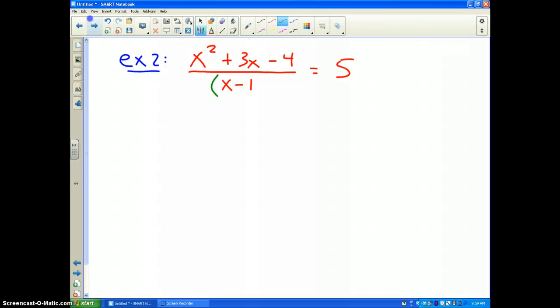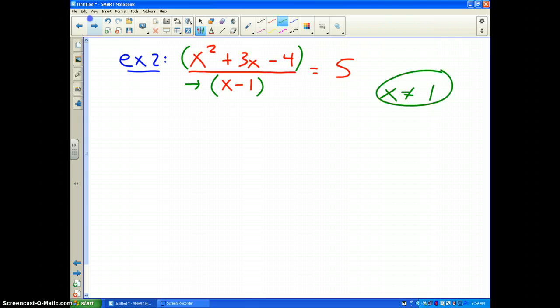All right, again, I put in parentheses. And I look at the denominator and I realize that x cannot be the number 1. x cannot be 1. Well, now I'm going to factor the numerator. That factors into x. We need a minus and we need a plus. What does that turn out to be? It looks like plus 4 and minus 1.